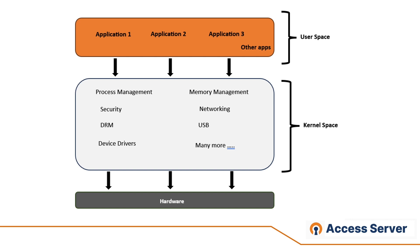If a process in the user space crashes, it's less likely to impact the whole system compared to a crash in the kernel space. As you can see in the diagram, the higher up in a layer, the further away you are from the hardware and the slower your program runs. So when you think about encrypting data, it can be a challenge — exchanging data between the two layers costs processing power, which introduces a bottleneck for OpenVPN speed.